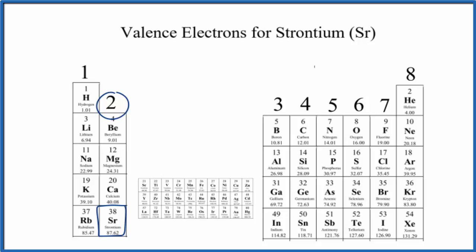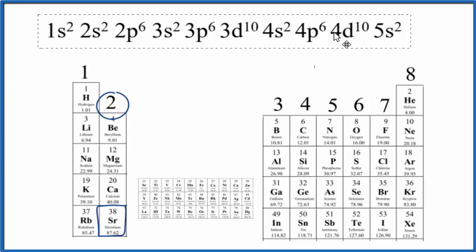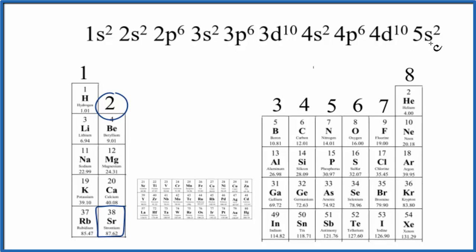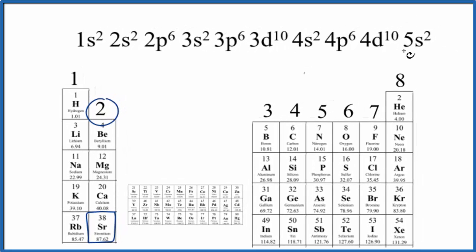We could also look at the electron configuration for strontium. That would look like this. So we find the highest energy level — we have the fifth energy level here, that has 5s². So that means it has two valence electrons, just like we found from the periodic table, since strontium is in Group 2.